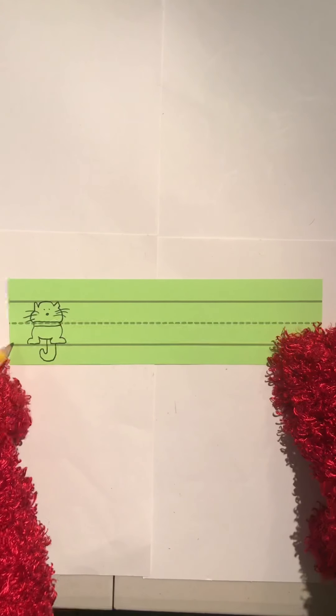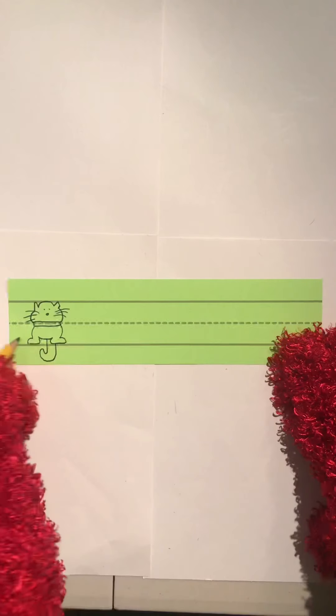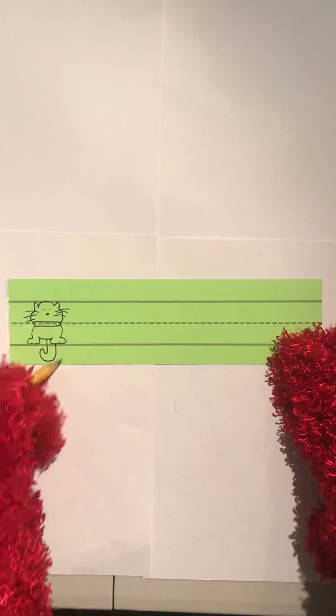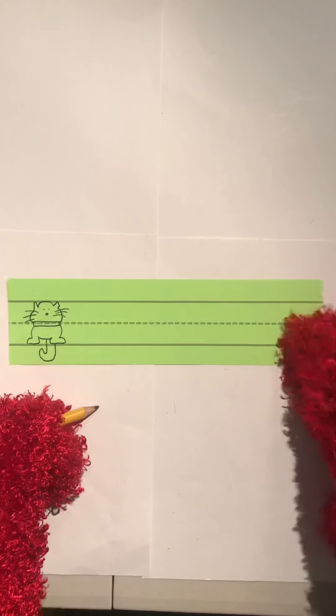And then there's another line down here. It's another long straight one, and it touches his feet. So we're going to call it the foot line. Now the tail has a cat that hangs down, but with the letter I, we're not going to worry about that.